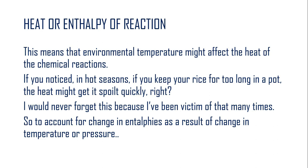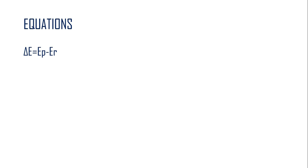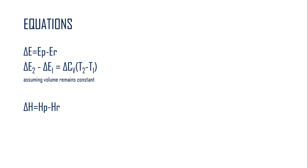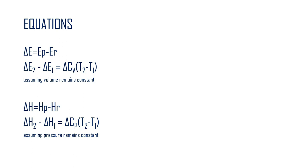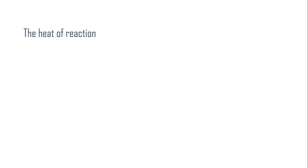To account for the change in enthalpies as a result of changing temperature or pressure, we need to know some formulas. On the assumption that volume remains constant, we use delta E. The enthalpy formula is delta H equals HP minus HR. When external enthalpies are affecting the system — such as environmental enthalpy — we use the formula: delta H2 minus delta H1 equals delta heat capacities at constant pressure multiplied by (T2 minus T1). This formula applies when pressure remains constant.